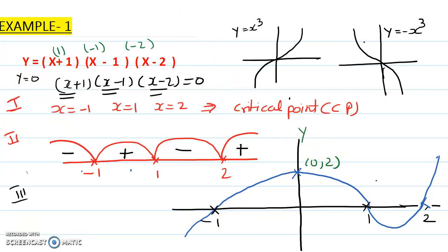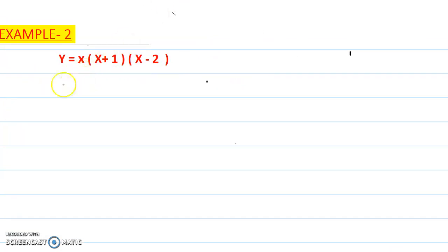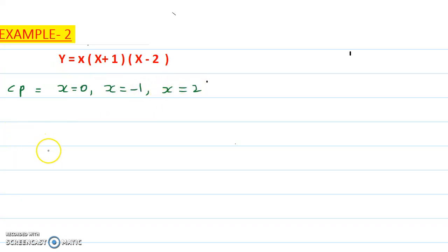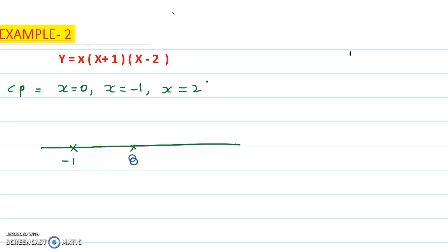Let's go to Example 2. The critical points are: x=0, x=-1, and x=2. The second step is to arrange them in order on the number line: -1, 0, and 2, then make the bridge shape diagram.